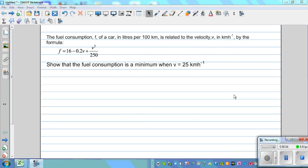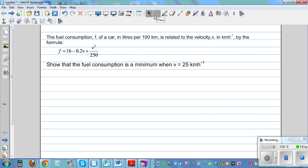Let's look at this question. It says the fuel consumption F of a car in liters per 100 kilometers is related to velocity V in kilometers per hour. And the formula which relates fuel consumption to velocity is F = 16 - 0.2V + (1/250)V².